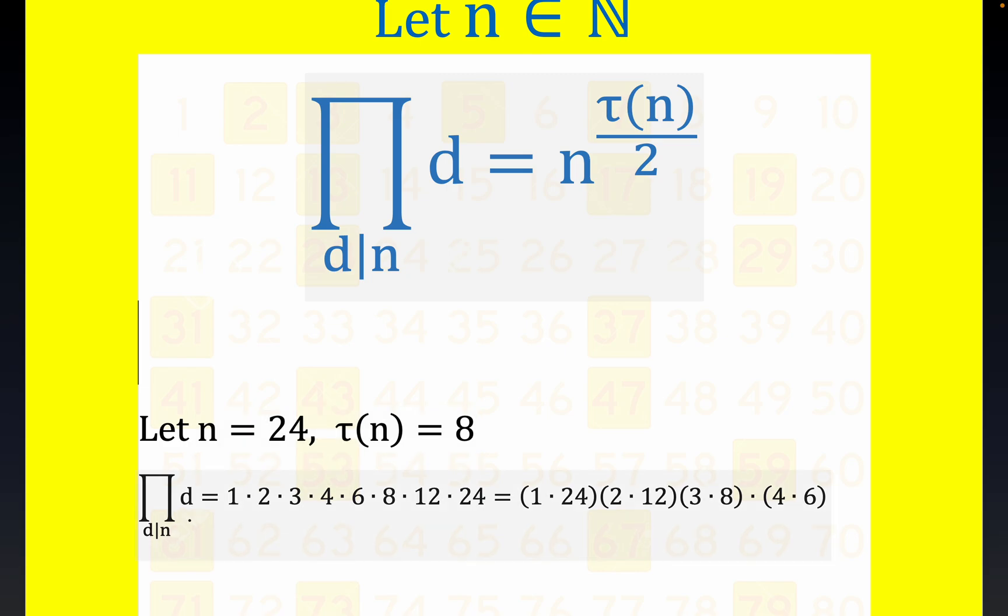As d ranges through all the divisors of some natural number n, in this particular case for 24 the divisors are 1, 2, 3, 4, 6, 8, 12, and 24.